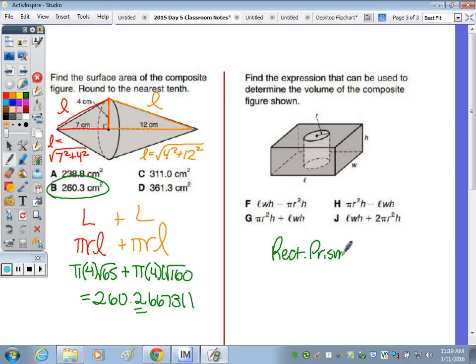On the right, we just need to find the expression that can be used to determine the volume, not the actual volume. So I want to take this rectangular prism and subtract the volume of the cylinder. So the volume of the rectangular prism is length times width times height minus capital B times h. And for a cylinder, the area of the base would be pi r squared, which is choice F.